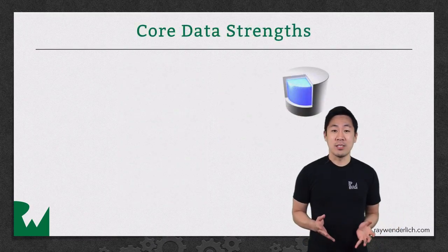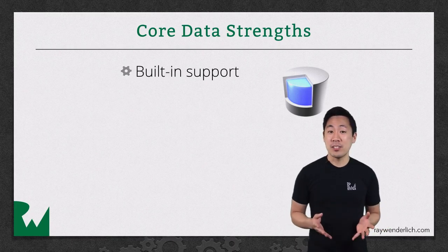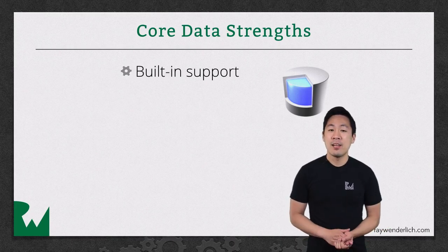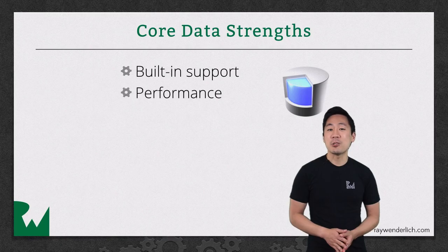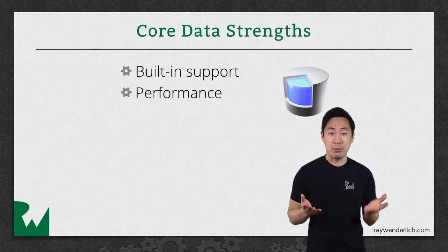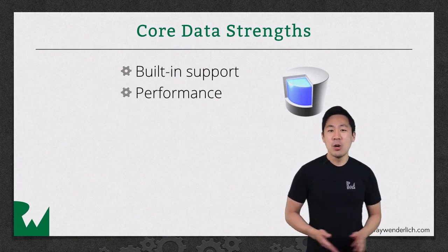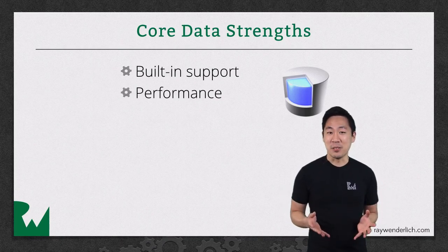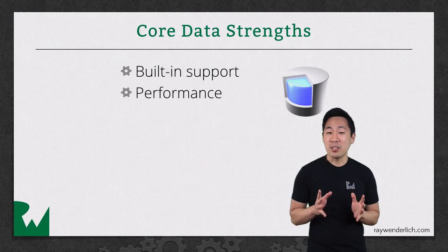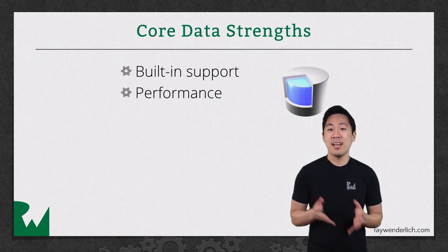The major strengths of Core Data as I see them are its built-in support — you don't need any third-party tools or libraries and you can get started in Xcode very easily. There's also performance. Core Data isn't the speediest solution out there, but it strikes an excellent balance between speed and memory usage. If your fetch request returns a million records, for example, Core Data won't actually load all the data for all million records. It'll tell you that there are a million records, but then it'll be smart about only instantiating full objects and pulling in data as you actually access those objects and their properties.